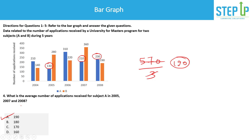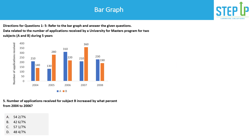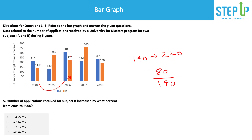Question 5: By what percentage did the number of applications received for subject B increase from 2004 to 2006? Subject B (the orange bar) went from 140 in 2004 to 220 in 2006. The actual increase is 220 minus 140, which equals 80. The percentage increase is 80 divided by the base of 140.